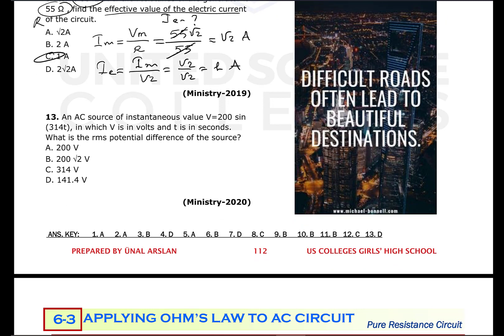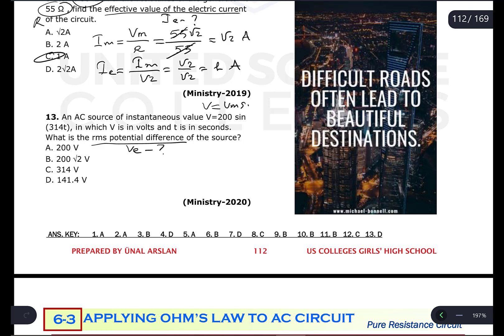Question number thirteen: an AC source has instantaneous value V = 200 sin(3.14t), where V is in volts and t is in seconds. What is the RMS (effective) potential difference? Comparing with V = Vm · sin(ωt), the maximum potential difference is 200 volts. Effective value = Vm / √2 = 200 / √2.